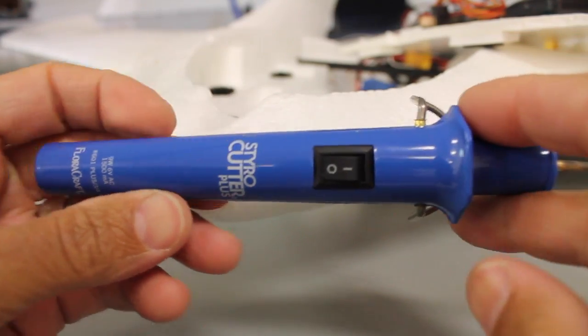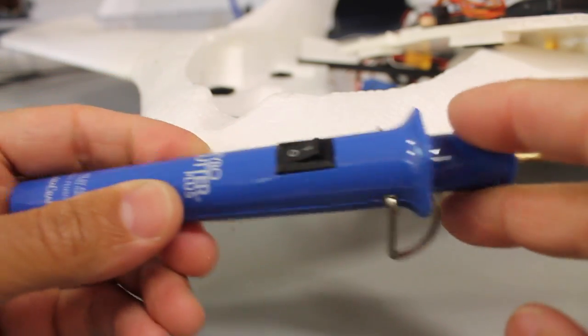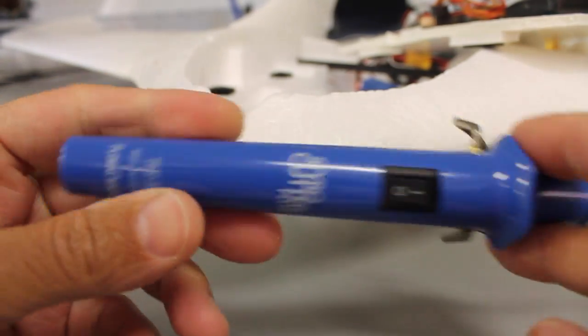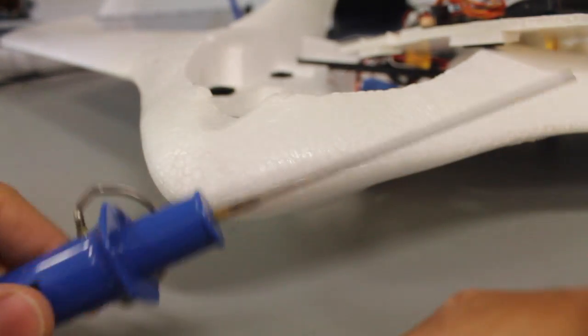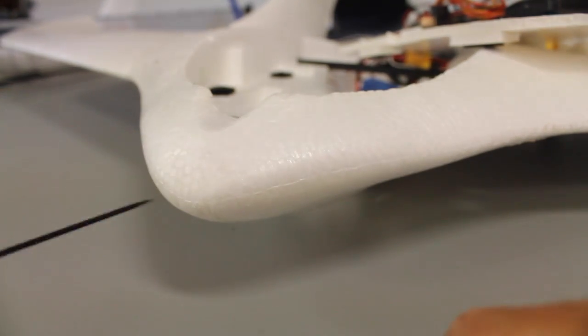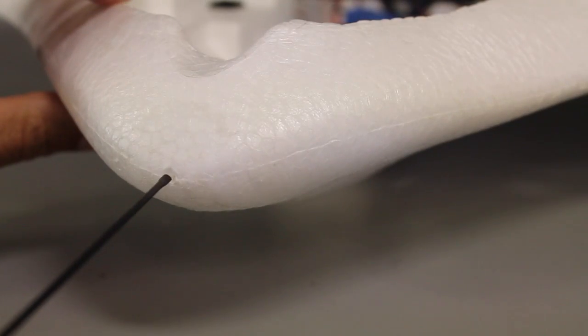I'm going to use my handy styrofoam cutter. This is something that I got off of eBay, I believe for about twenty dollars at the time, but you just plug it up to power, turn it on and then we'll go ahead and make that hole. Okay so our cutter is nice and heated up.